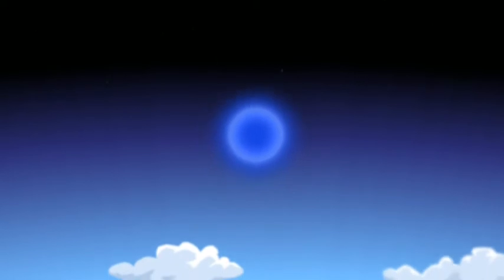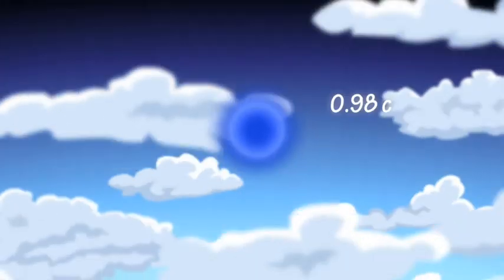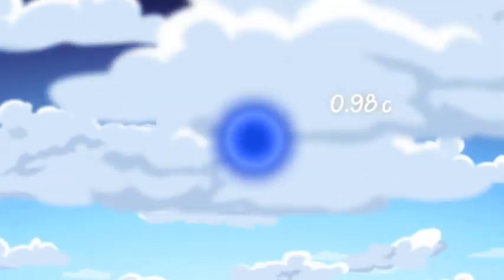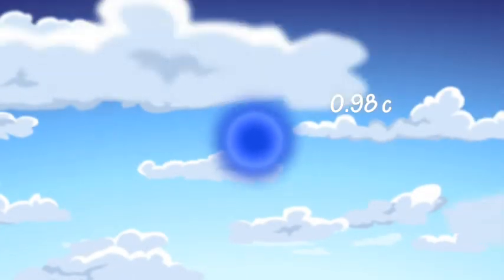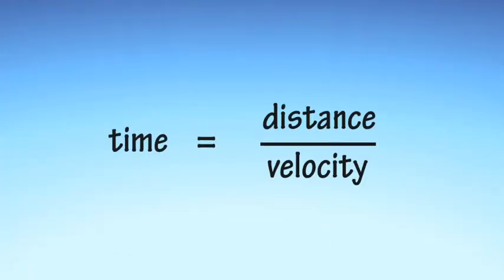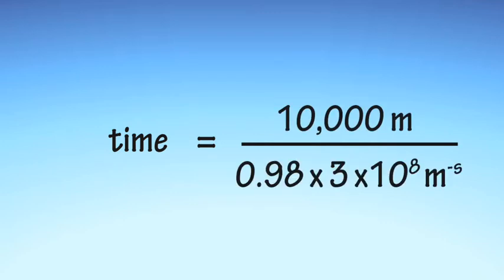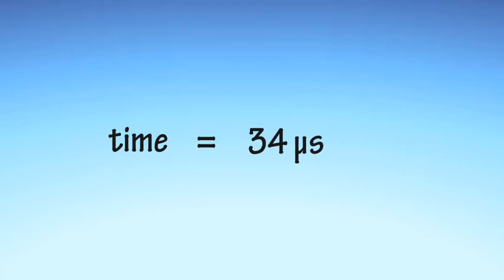This muon was created 10 kilometers above the surface of the Earth, and is traveling at 0.98 times the speed of light. How long will it take the muon to reach the ground? Using Newtonian mechanics, we know that time equals distance divided by velocity, and we can calculate that the muon will take 34 microseconds to travel the 10 kilometers or 10,000 meters to reach the ground.